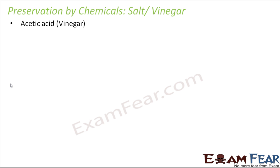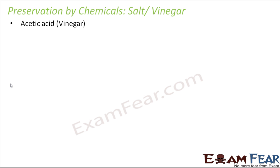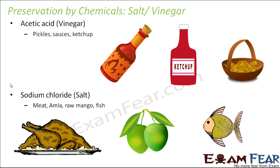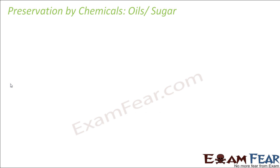Salt and vinegar (acetic acid) are used in pickles, sauces, and ketchup, which can last for months or even years due to these chemical preservatives. Sodium chloride is used to preserve meat, fish, amla, and raw mango. For example, you can wash fish, dry it, add salt, and it will not get spoiled for quite some time.